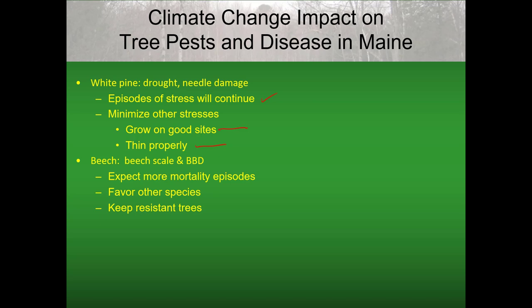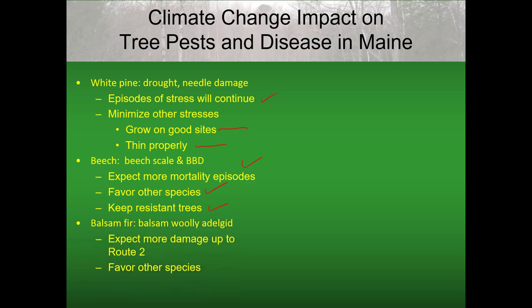For beech and beech bark disease, expect more mortality episodes. With beech, really it's about favoring other species. But where you find resistant beech trees — where there is no scale, where there is no cankering — keep those and protect those and maintain them in the forest. For balsam fir and the balsam woolly adelgid, we're expecting to see more damage on balsam fir up to Route 2, and the best strategy is similar to spruce budworm: favor other species over balsam fir.